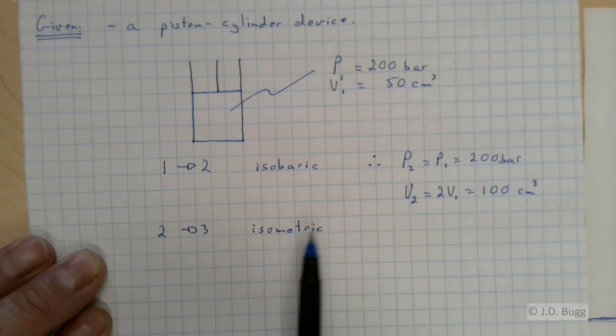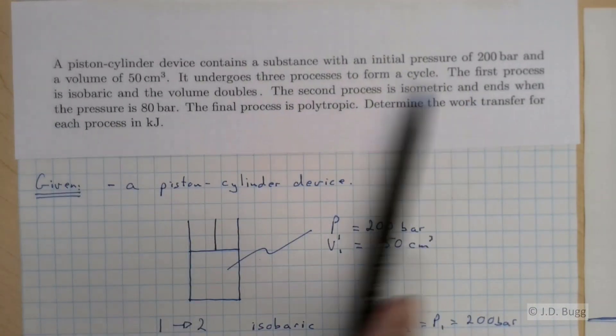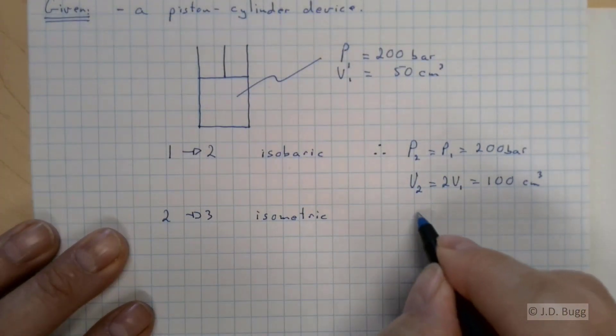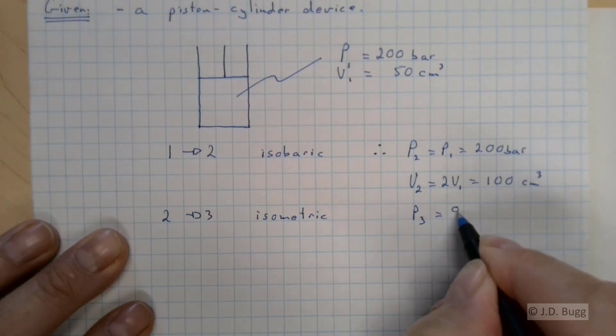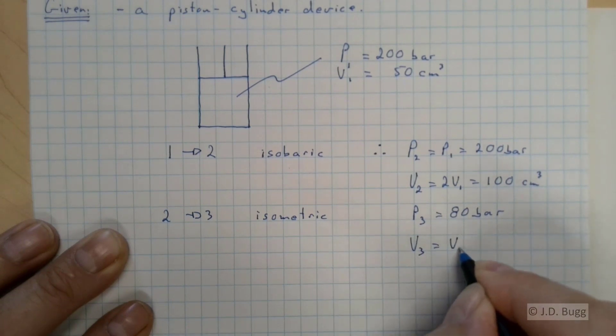Process 2 to 3 is isometric. The problem statement says that the isometric process ends when the pressure is 80 bar. So that tells us that P3 is 80 bar. And because it's isometric, that means V3 equals V2.